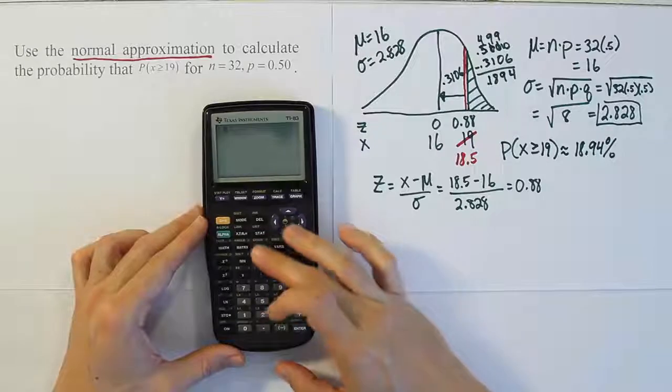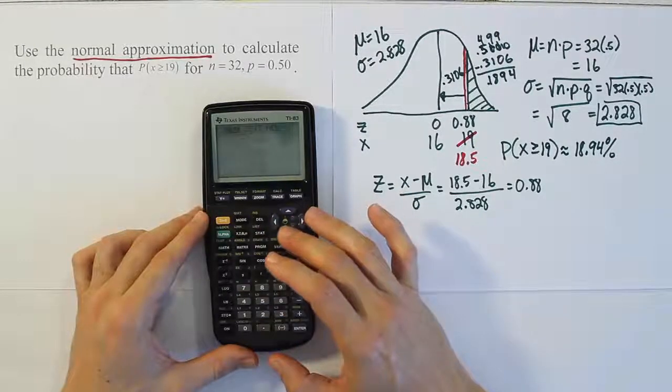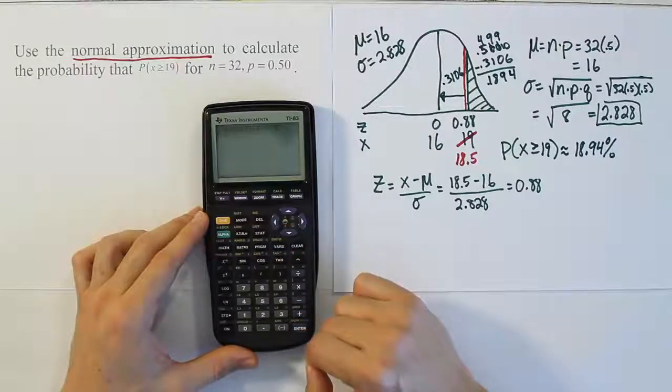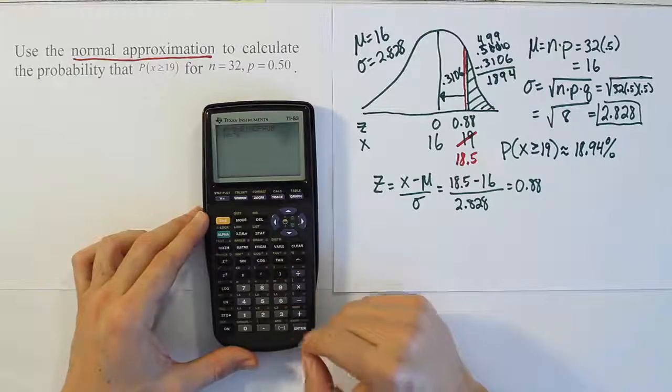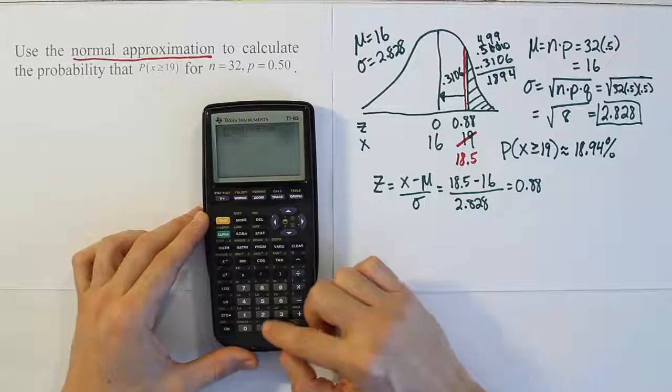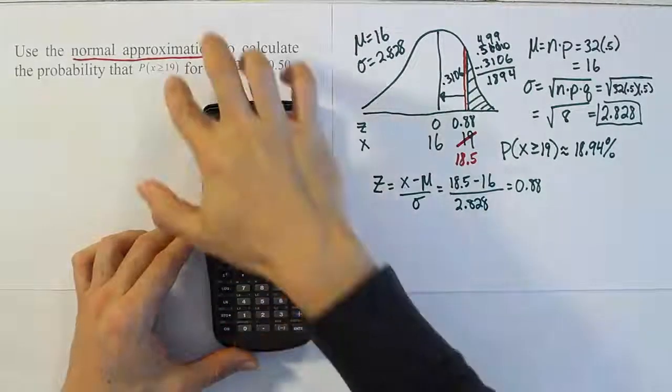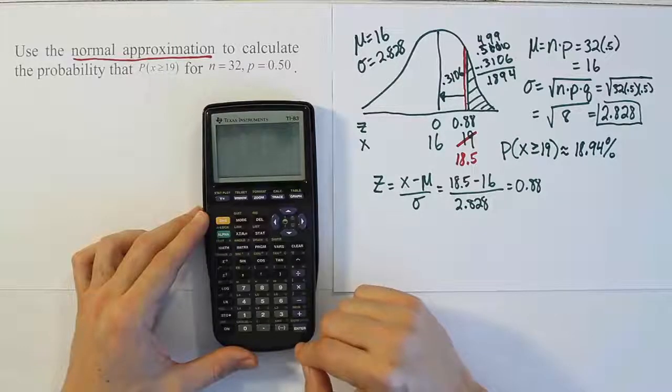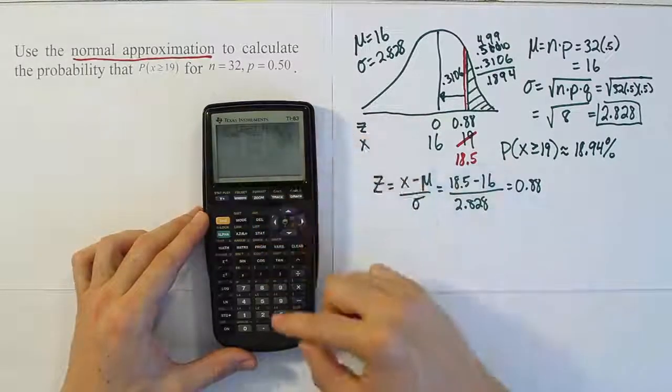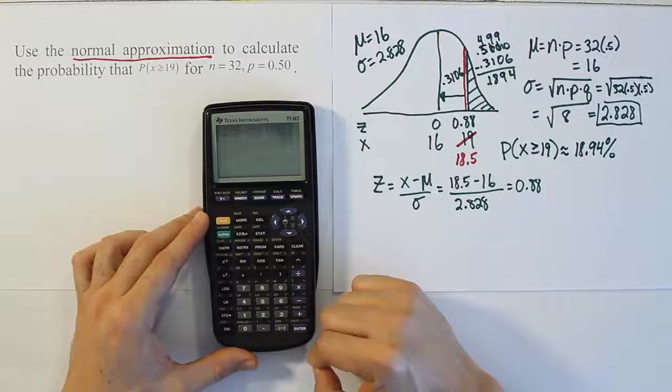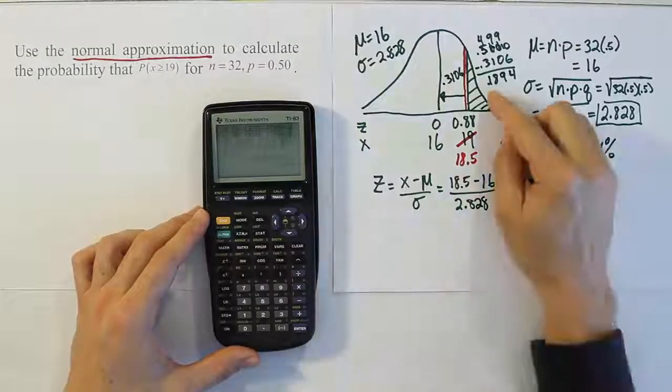On my calculator I've written a program. I select binomial probability from my program menu. Our n is 32, our probability is 0.5. Our x value is 19 or more, so I'm going to push option 1, x or more. When I do that I get the answer 0.1885.